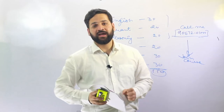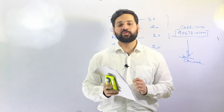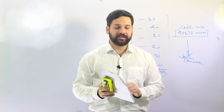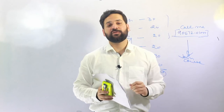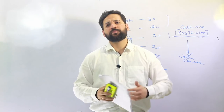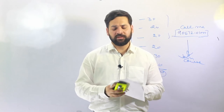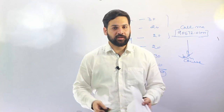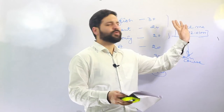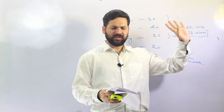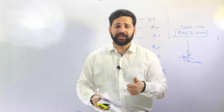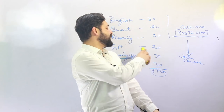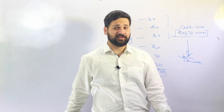In the English section, you are going to find one reading comprehension followed by para jumbles, synonyms, antonyms, sentence correction, and a cloze test. It is a very easy portion. If you are reading a newspaper every day, then you are covering the English section as well as the GA section.